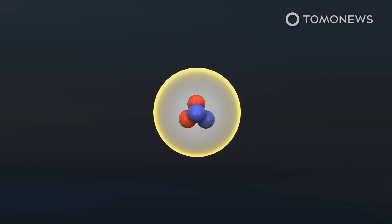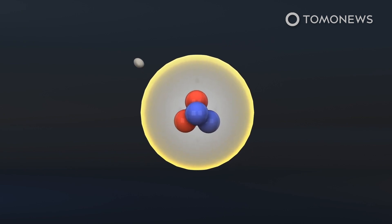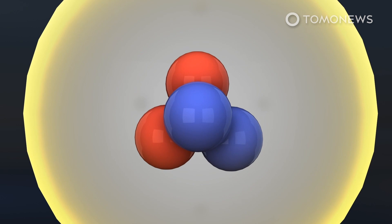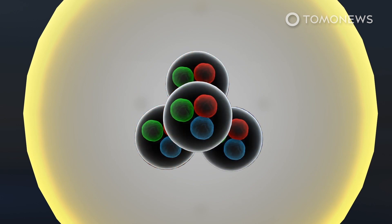Quarks are elementary particles that serve as the building blocks of all matter, but most naturally existing matter, such as protons and neutrons, is made of three quarks or fewer. A particle formed by four heavy quarks of the same type has never been seen before.